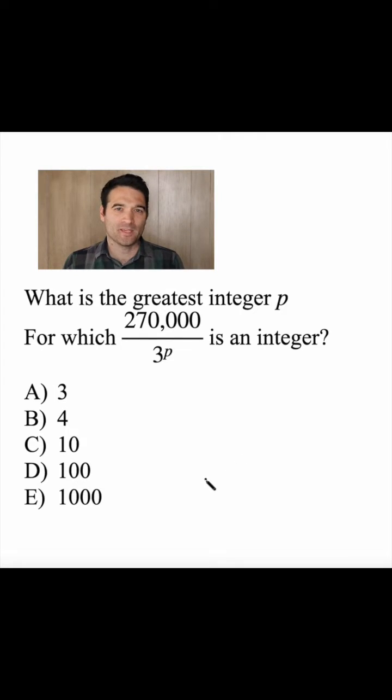What is the greatest integer p for which 270,000 divided by 3 to the power of p is an integer? Well, this question is asking something pretty straightforward. It's just asking, how many times can I divide this number by 3 until I can't anymore?